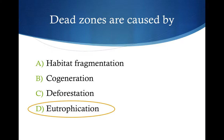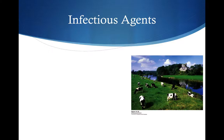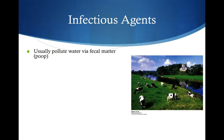Quiz question: Dead zones are caused by A, habitat fragmentation; B, cogeneration; C, deforestation; or D, eutrophication? The correct answer is D, eutrophication — the entire process of too many nutrients entering the water, leading to an algae bloom, then algae death, then decomposers breaking down the dead algae, and then dissolved oxygen decreasing to levels unlivable for other aquatic life.